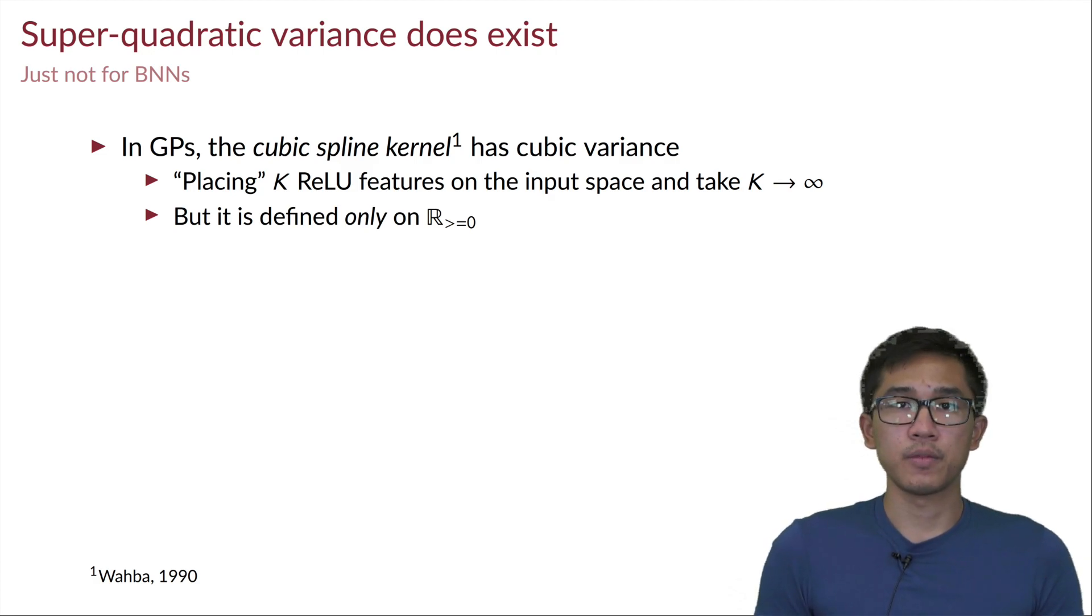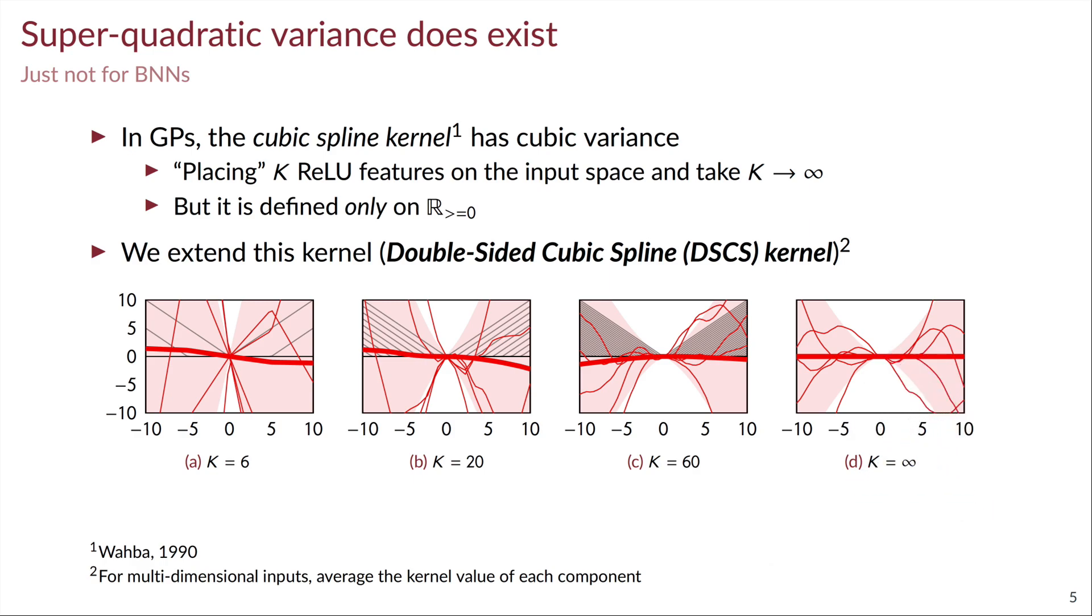But the problem with this kernel is that it's only defined, without loss of generality, in the non-negative half space of the real line. And so we propose to extend this kernel by having another copy of the cubic spline kernel, flip it over, and add them together, and then we have this double-sided cubic spline kernel.